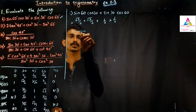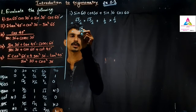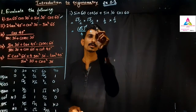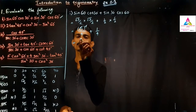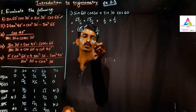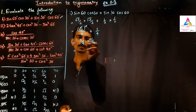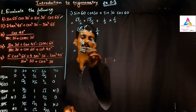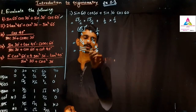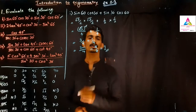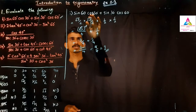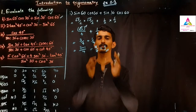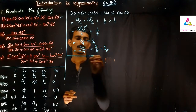Substituting: (√3/2) × (√3/2) + (1/2) × (1/2) = 3/4 + 1/4. Taking LCM, 3 + 1 = 4 divided by 4, giving 4/4 = 1. So the answer to Question 1 — sine 60° × cos 30° + sine 30° × cos 60° — is 1.